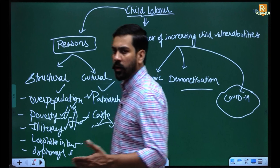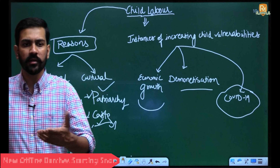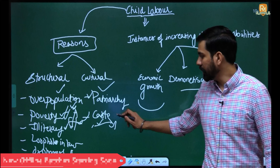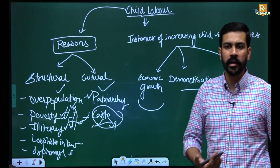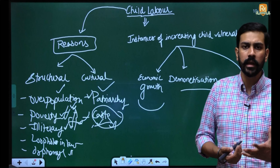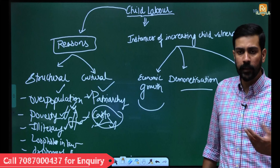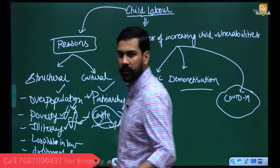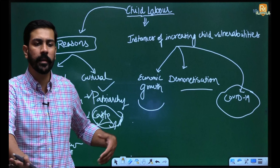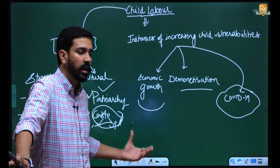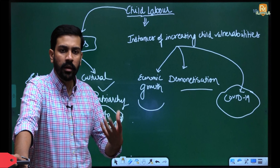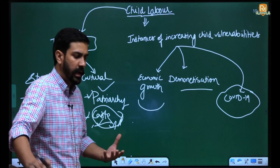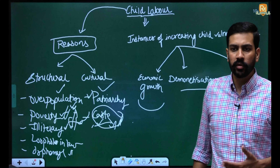Any policy can be fully successful only when all factors are taken into cognizance. We cannot ignore caste — we will have to see how bonded labor is prevalent within society and how lower castes face problems with respect to upward mobility. That should also be included within policy making.